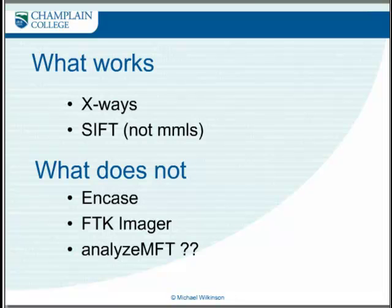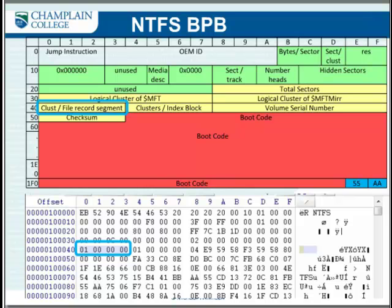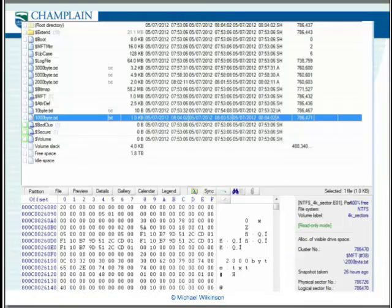FTK Imager does not see it as a valid file system — basically it just sees it all as unallocated space around the formatted partition. And the MFT parser actually crashes when processing the MFT. So if you're out there and you find a disk where you can't identify the file system but can see the normal NTFS information you would normally expect at the start of the file system, it is worthwhile checking the bytes-per-sector value and the sectors-per-cluster value to work out if you're actually seeing a 4K sector disk.